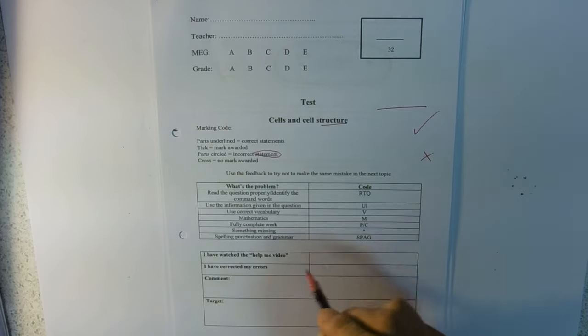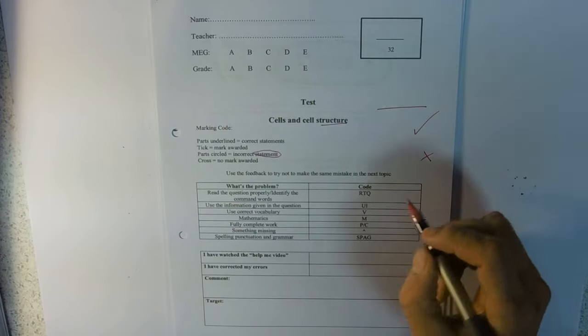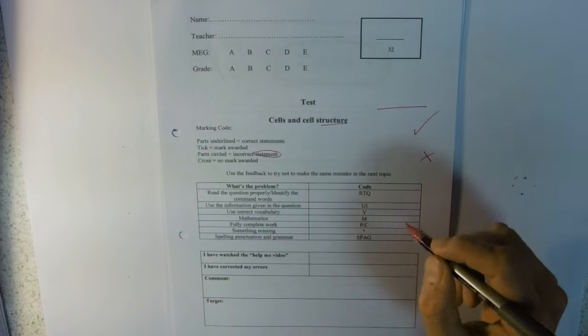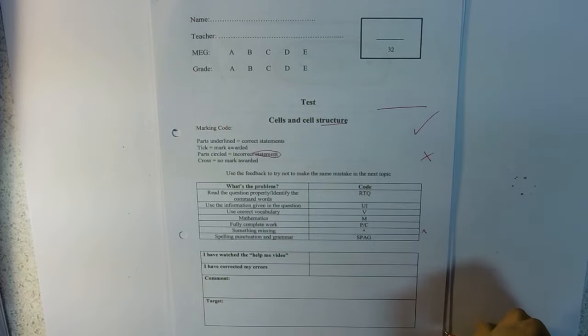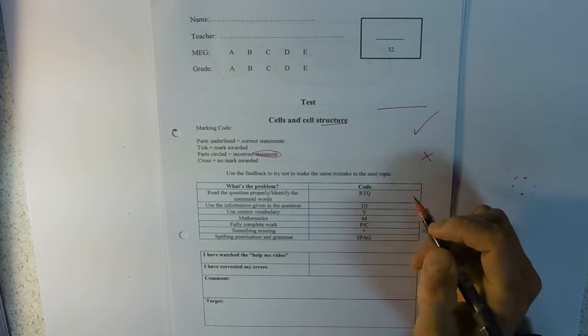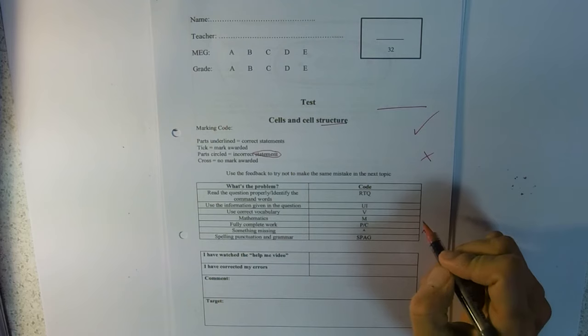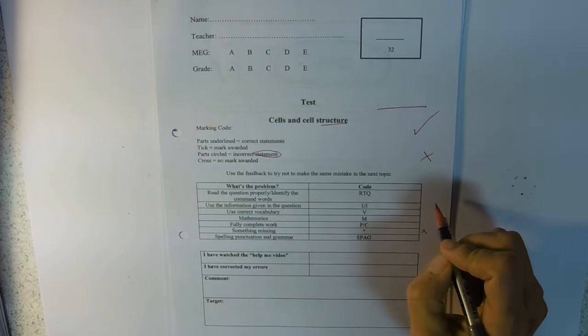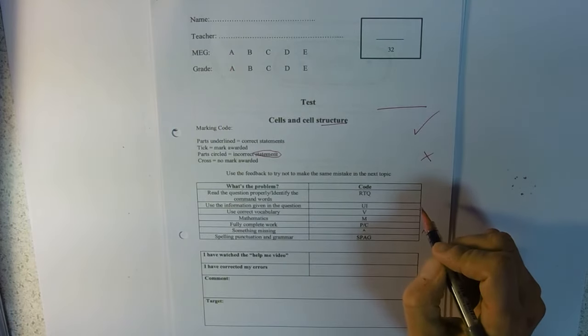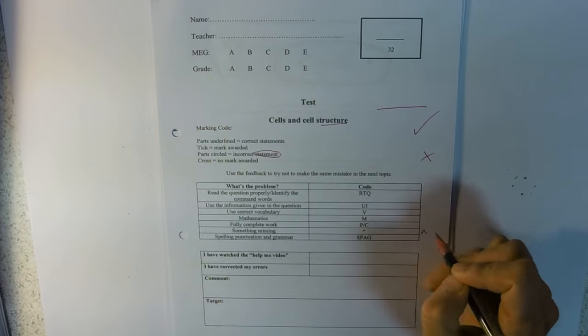If you've missed out a word usually, we use the little arrow. For example, the answer might be two words like image size. You might need that but you've just written image or size, and we put a little hat there to show that we need both words for example.